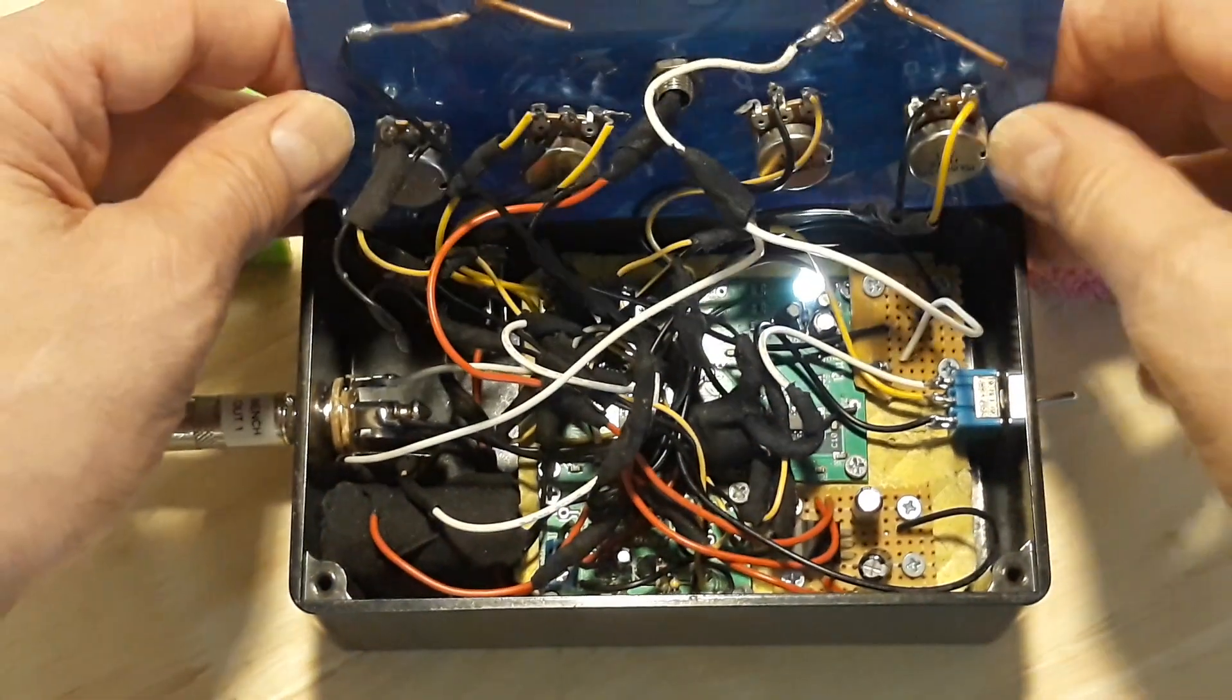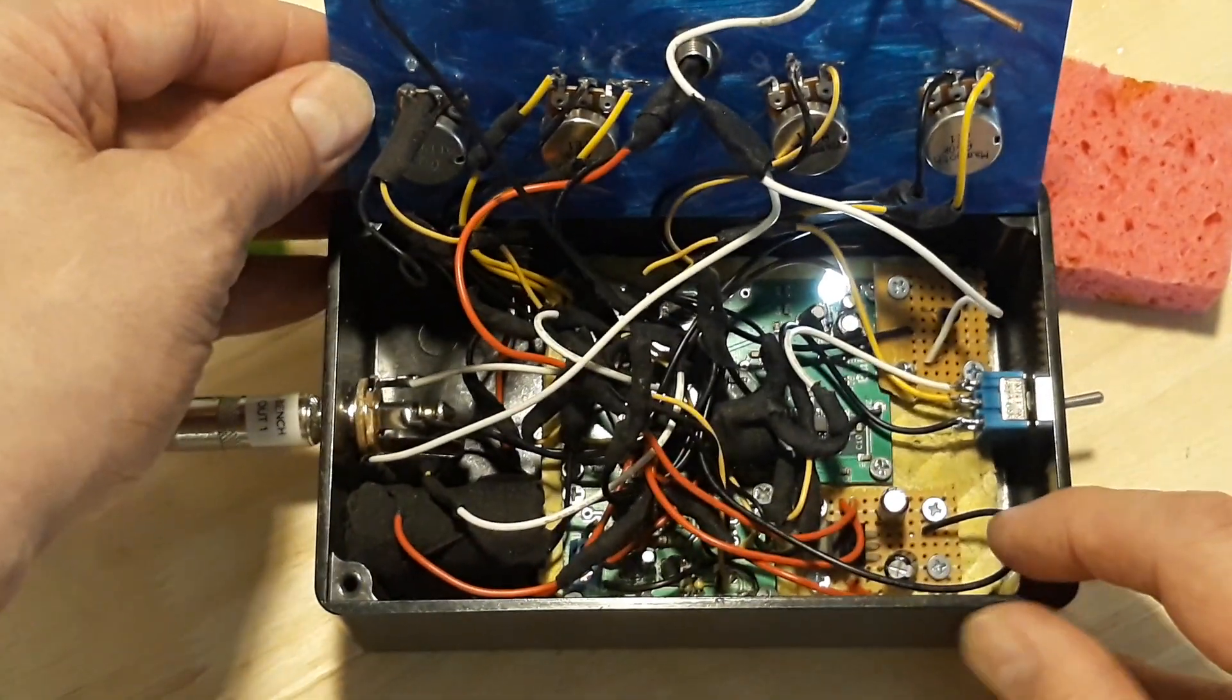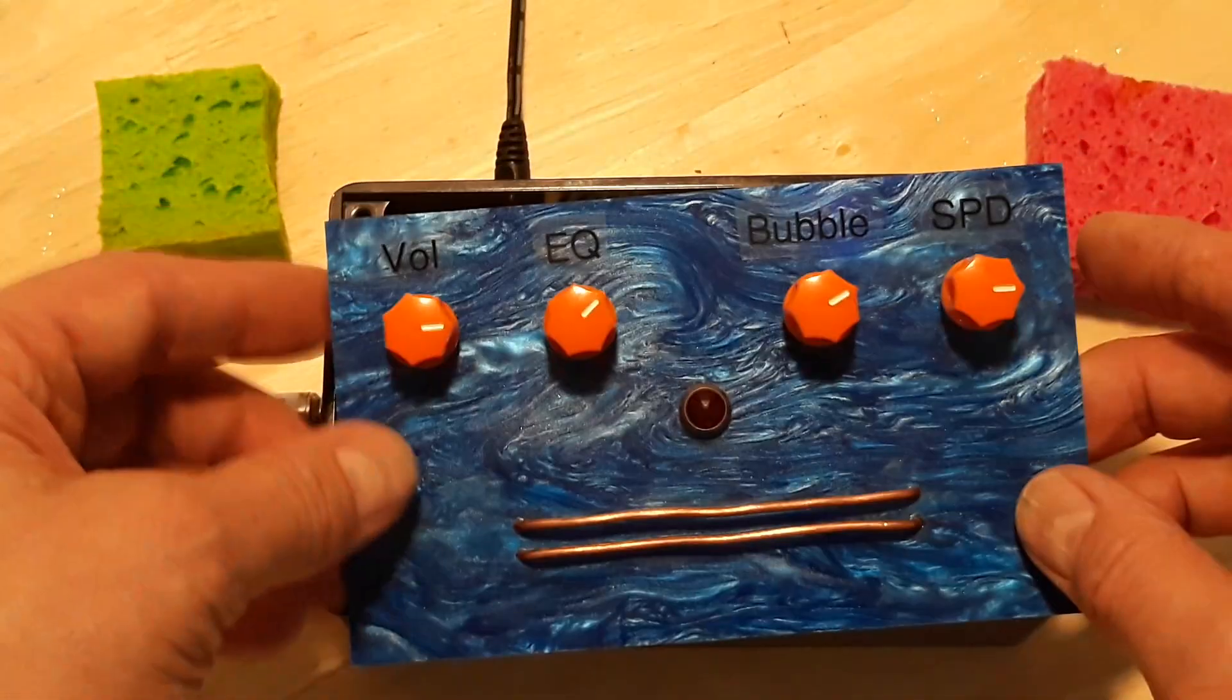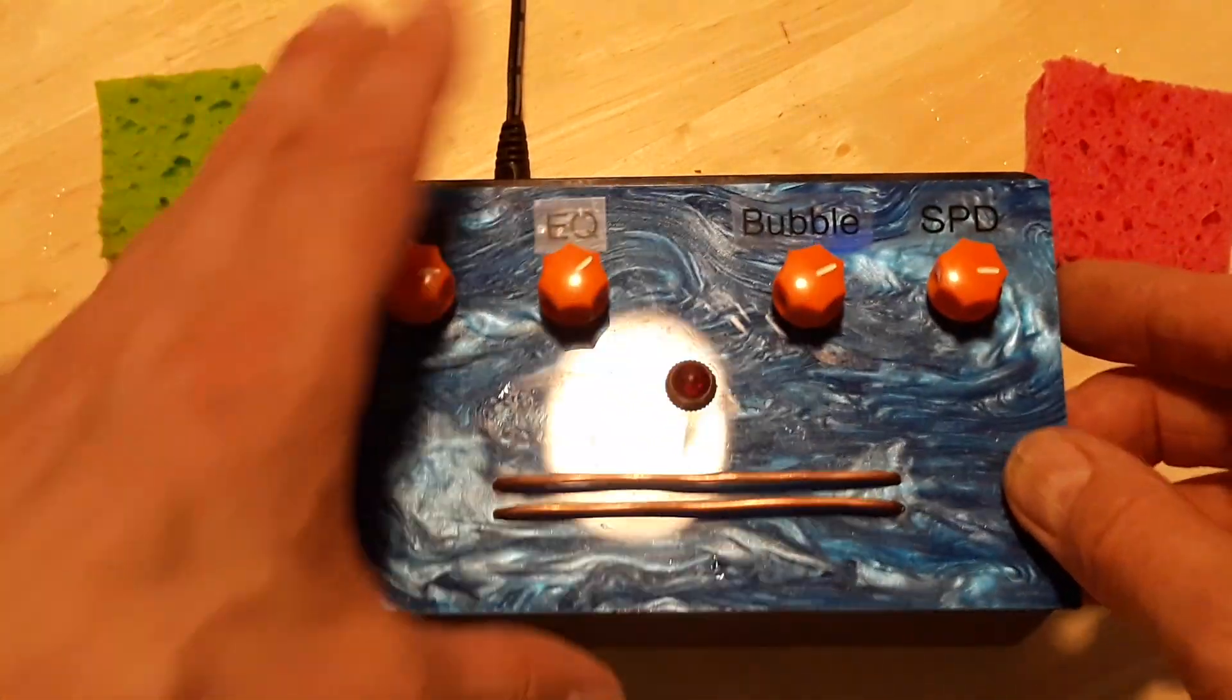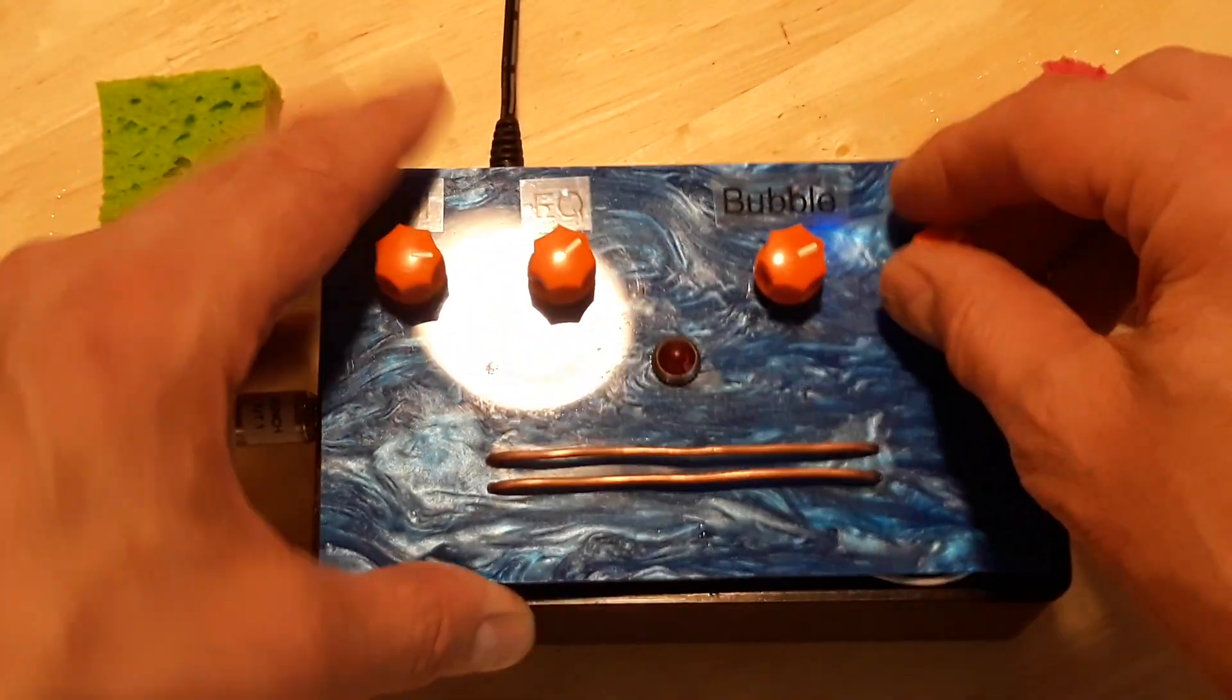So in here, there is an analog white noise generator, and that is run into a phase shifter with a bunch of parameters on it, a speed control, a global speed control, a fine-tuned speed control.